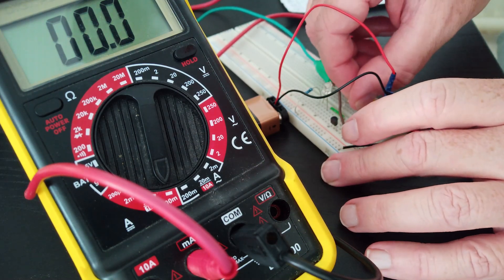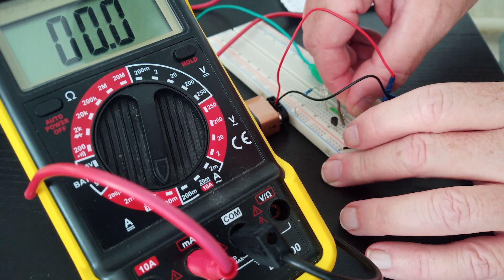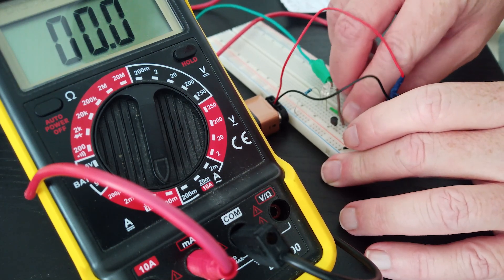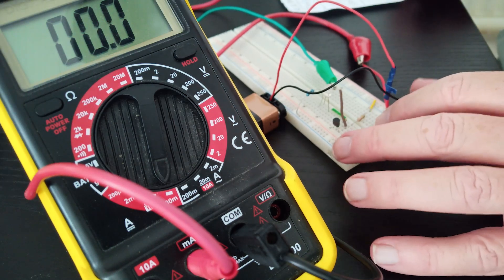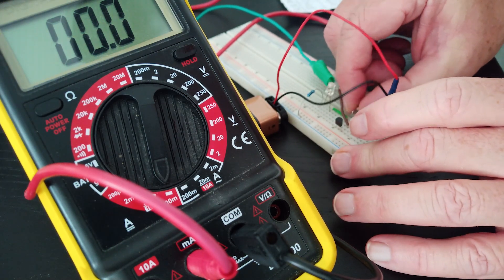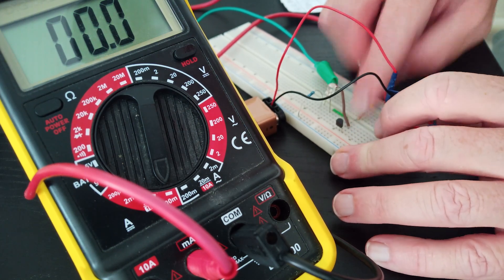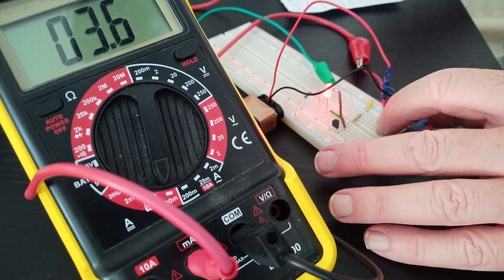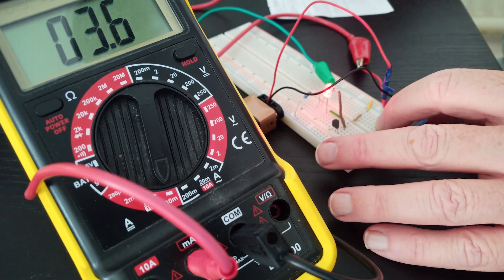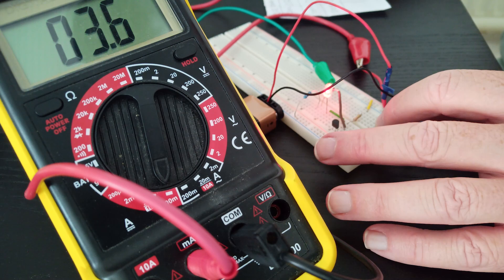And then finally again with the 330k. So pop that in to the base. Let's see what that gives us. Oh, I've made exactly the same error. Obviously don't learn from my mistakes. There we go. That is giving us 3.6.